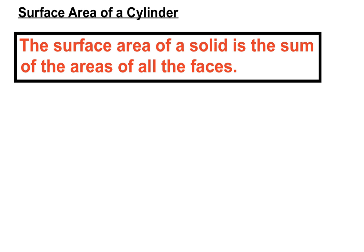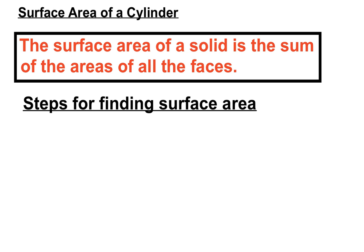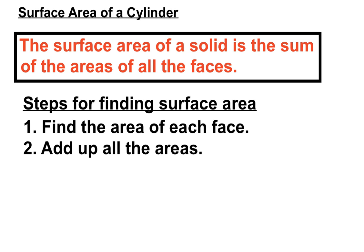Okay, surface area of a solid is the sum of all the areas of all the faces. Now that's true of solids with faces, but in a cylinder we have a curved surface as well, but we'll kind of count it as a face for the sake of argument. The steps for finding the surface area: we find the area of each face and we add up all the areas.